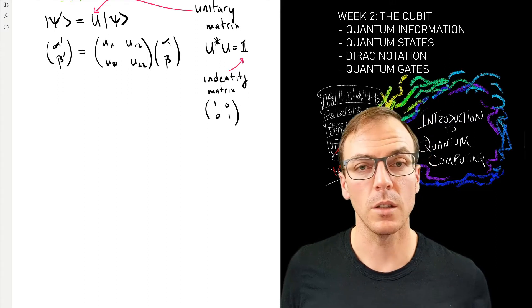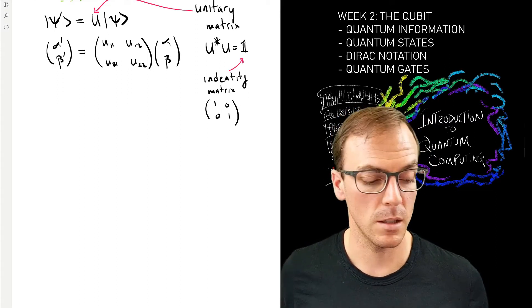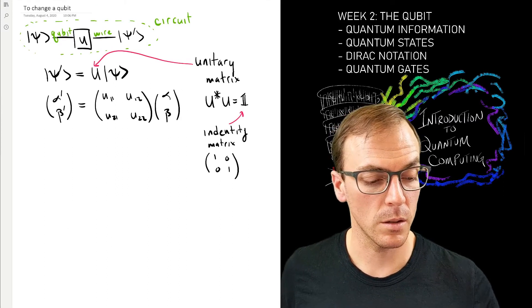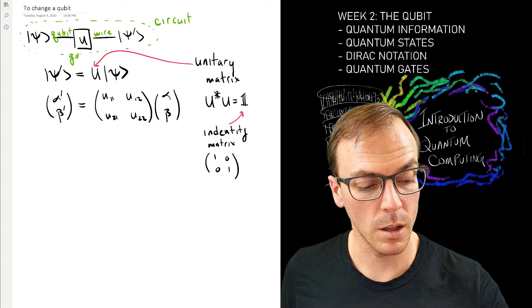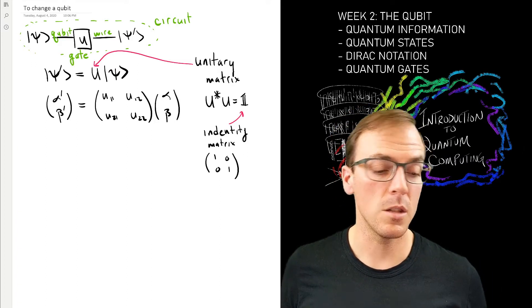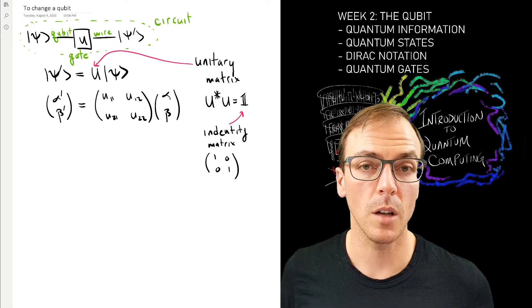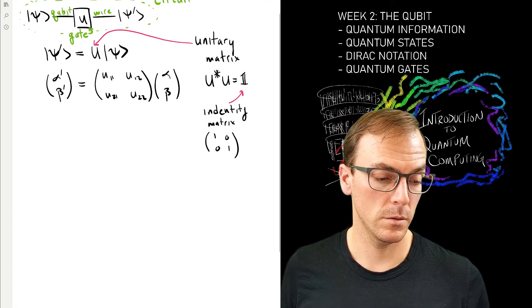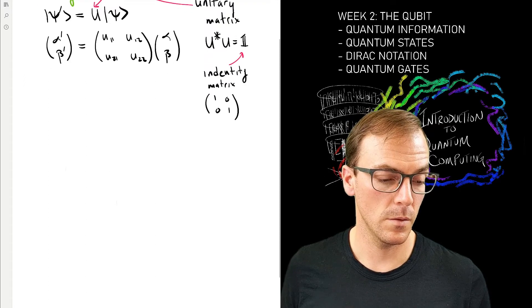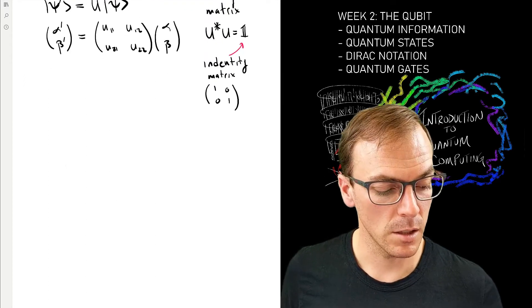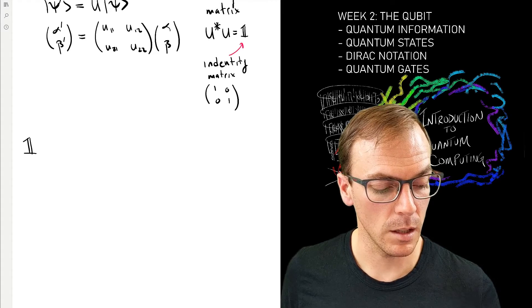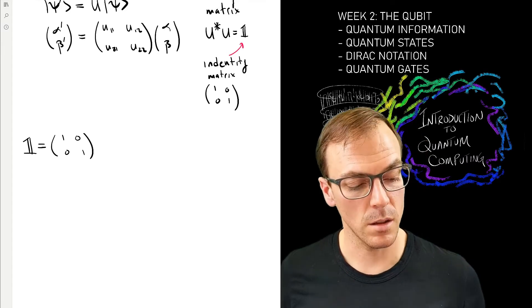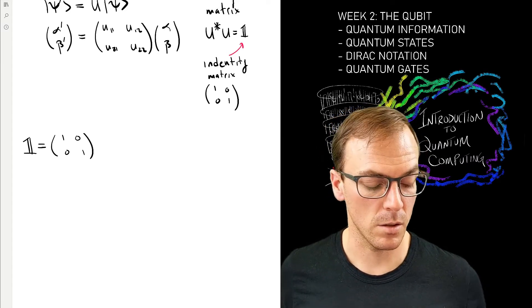Let me just say one more thing about notation: these unitaries in the context of computation are called gates. So special gates—we have the identity gate, which is the one with ones on the diagonal and zeros in the off-diagonal.